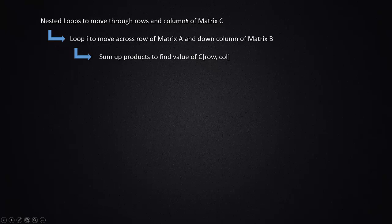So this code should be able to be put into our original code in this process. We use nested loops to move through the rows and columns of matrix C. And then for each row and column we are working on, we loop i to move across the matrix A and down matrix B. And as we do that, we sum up the products of A times B in order to get the value C.